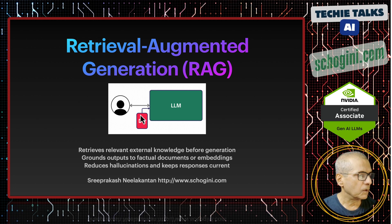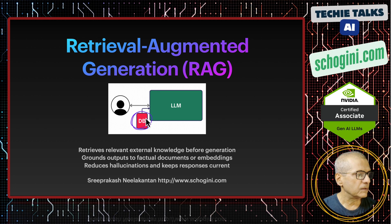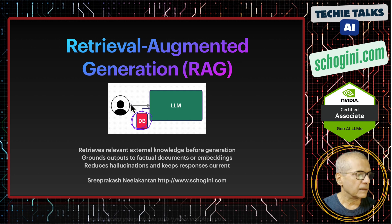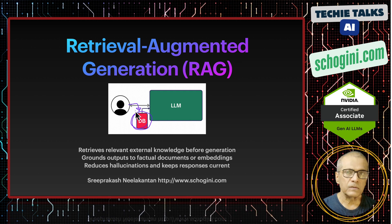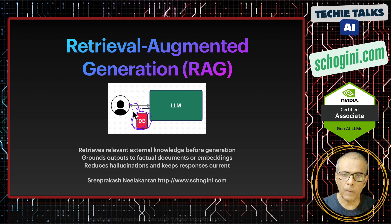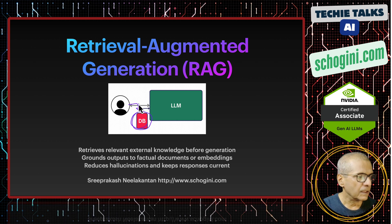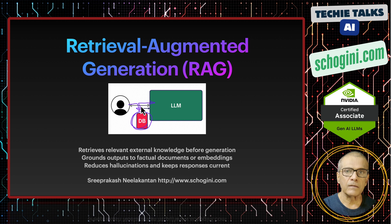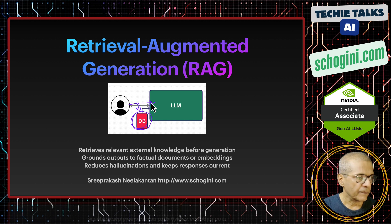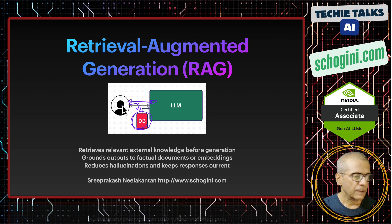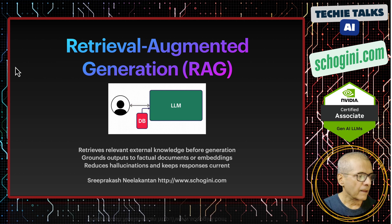What we did was we added a database, and the user query used to access the database and pick relevant chunks of the context, which were then communicated to the large language model. So the large language model used to respond in a more context-aware way. That was the second phase.